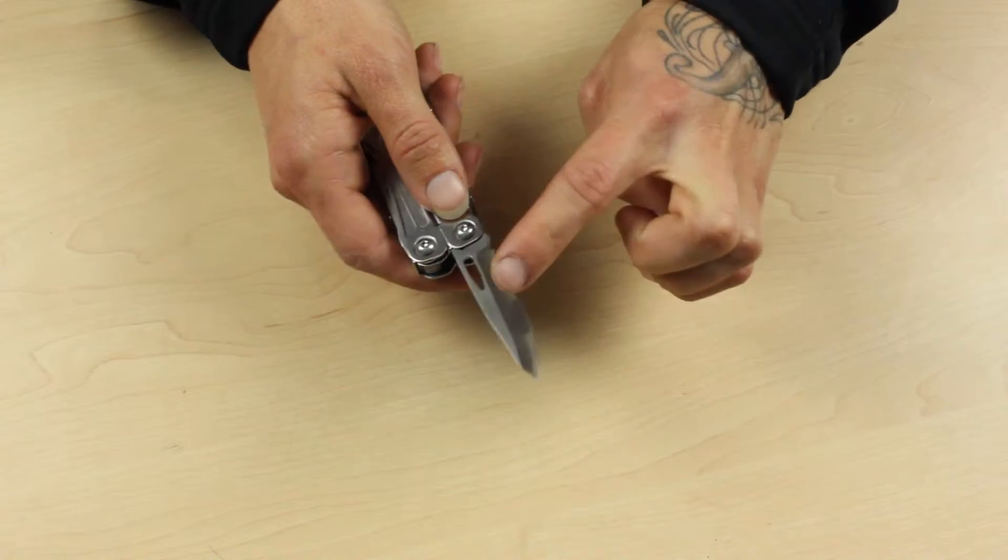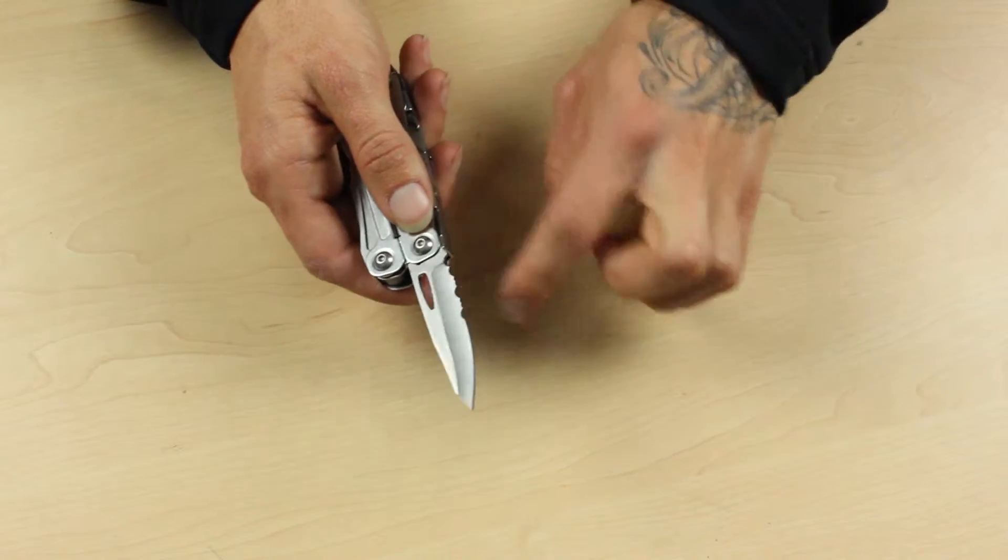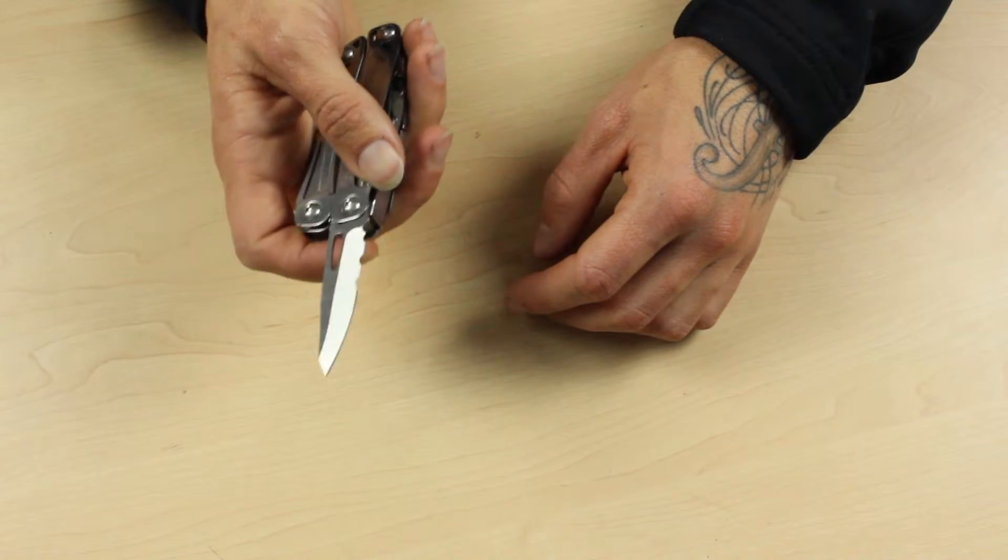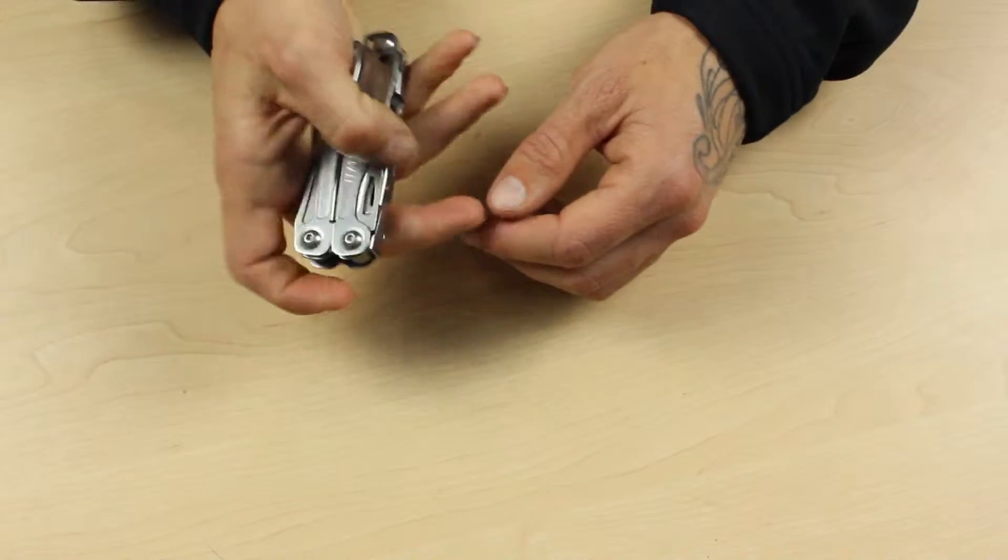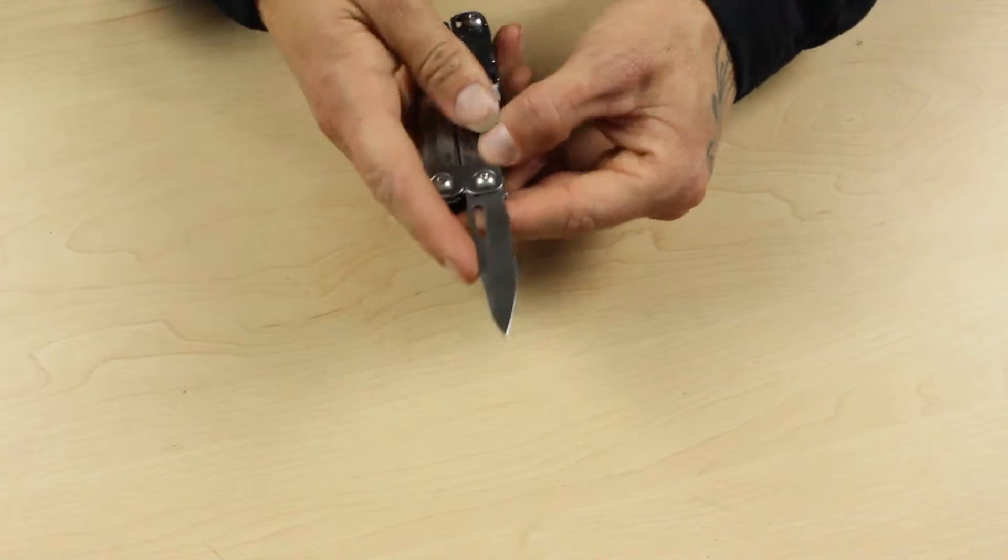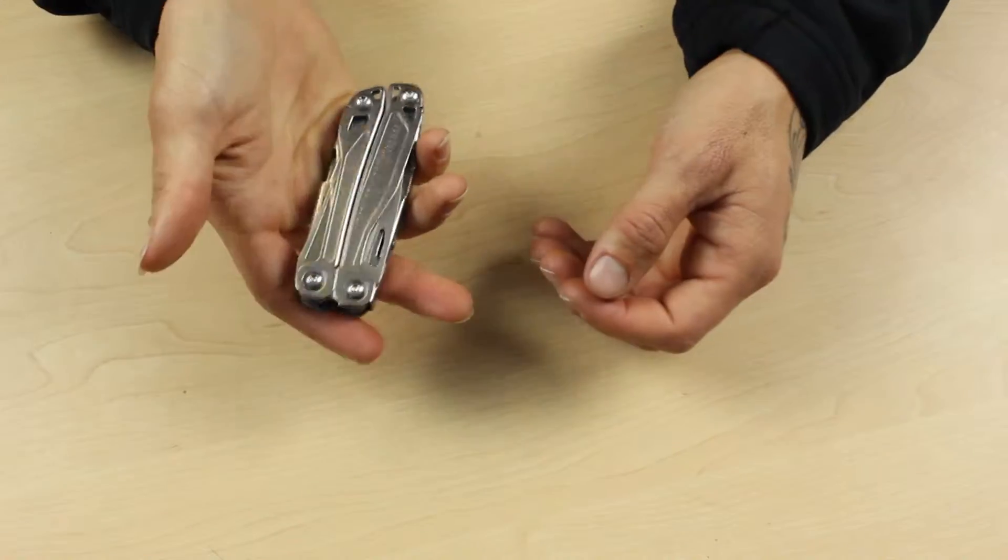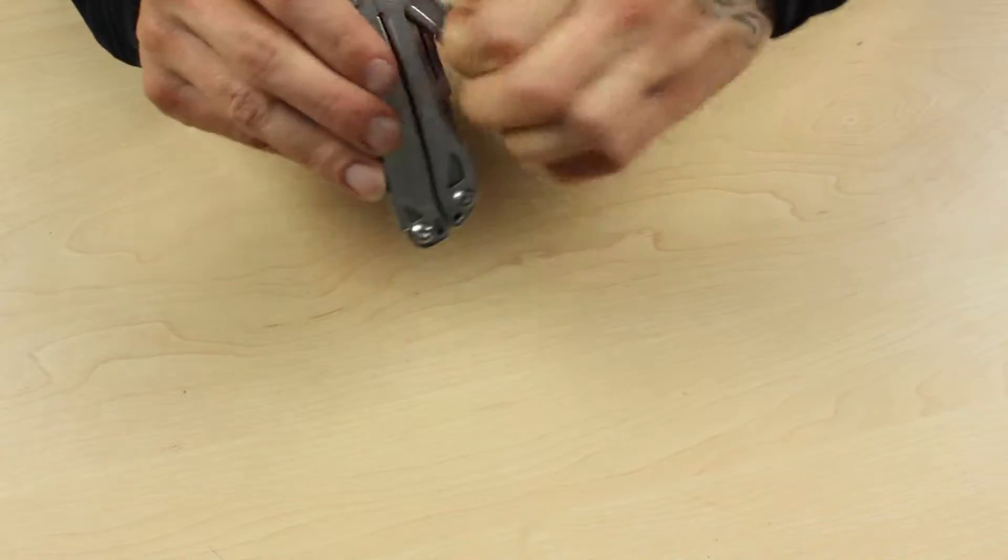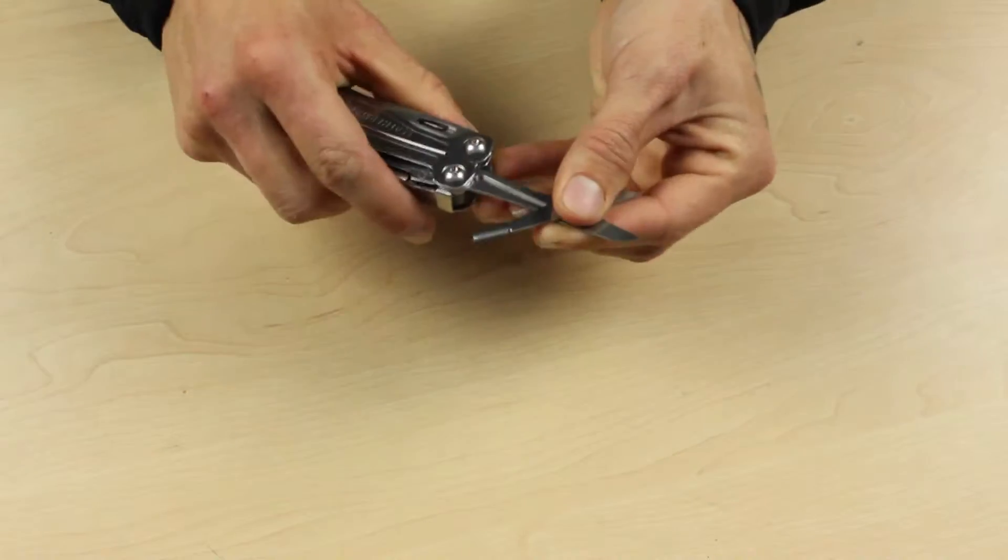It's a combination blade, so it's got your straight edge and serrated edge, and it's got a liner lock over here. So you can do one-handed closing as well. For safety's sake, it's probably worth practicing that slowly or getting used to it. And also, before we've even opened the tool, you've got access to the scissors right over here.